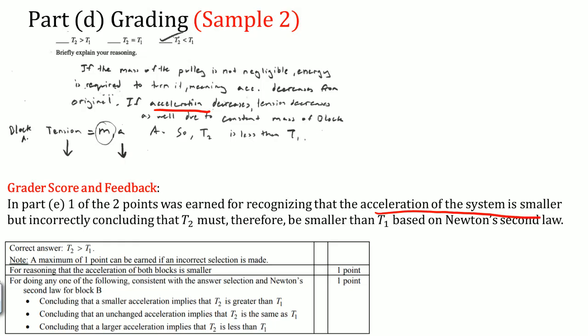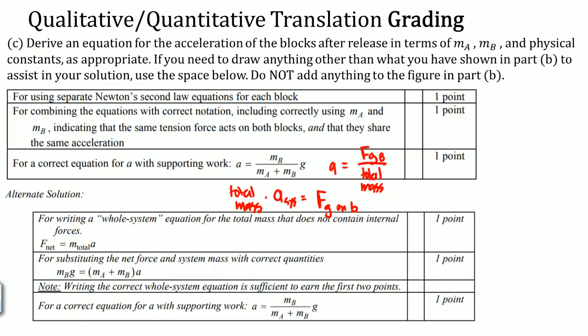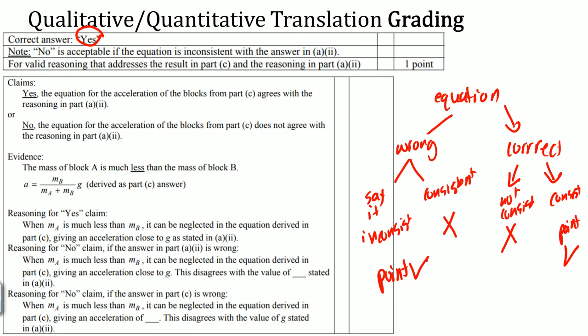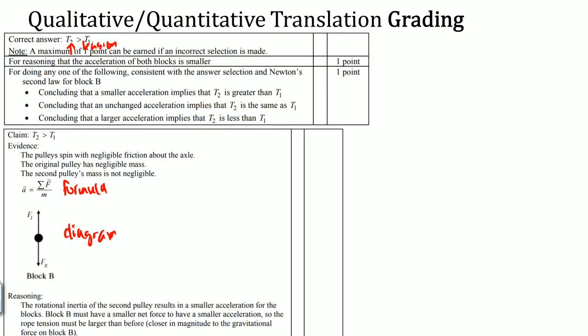That's how a QQT is graded. It always follows this structure: there's always a diagram or image, always a derivation step, and then they change the scenario and ask you to explain it. When you explain, follow the claim-evidence-reasoning format and you should be good. This is a great example of what a QQT could potentially look like on the exam.